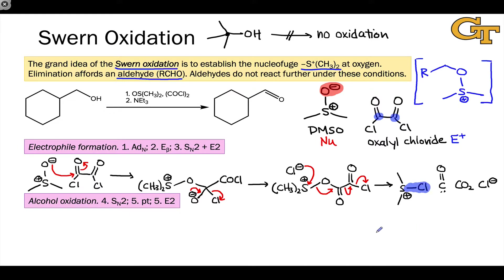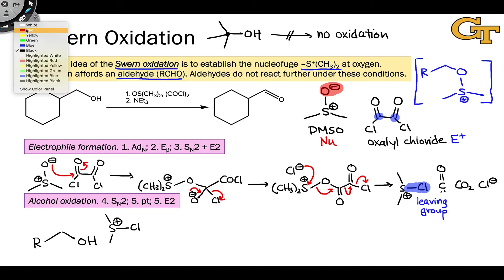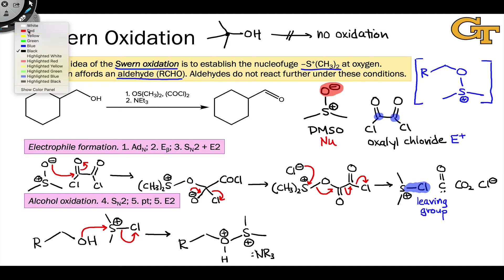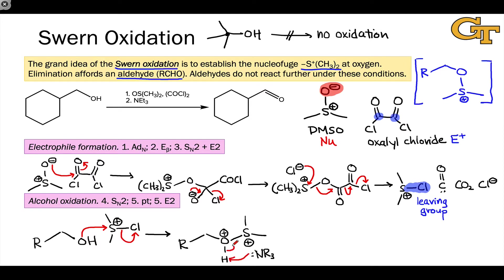At sulfur we now have the two methyl groups and a good leaving group in the form of chlorine. The alcohol has a nucleophilic oxygen and the sulfur is electrophilic with positive charge and a good leaving group. An SN2 elementary step links the dimethylsulfonium group to the alcohol oxygen. The resulting intermediate is very close to our goal — the dimethylS⁺ group connected to the alcohol oxygen — and the alcohol oxygen is now neutral.